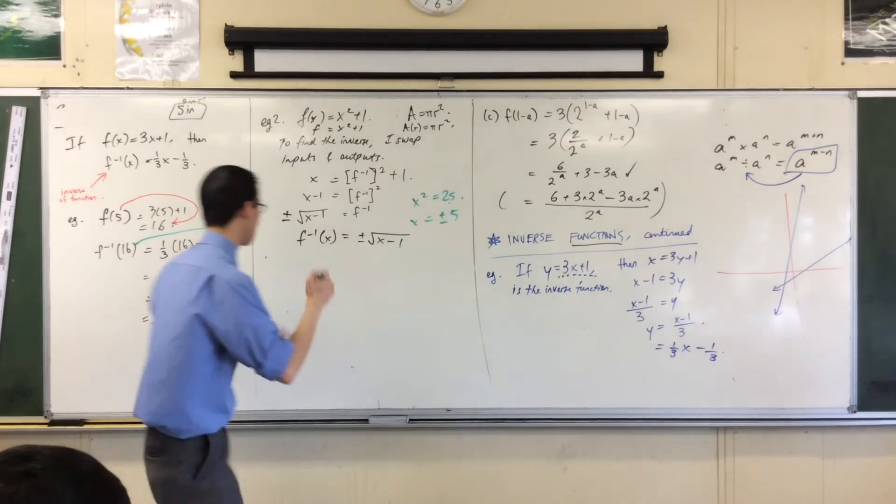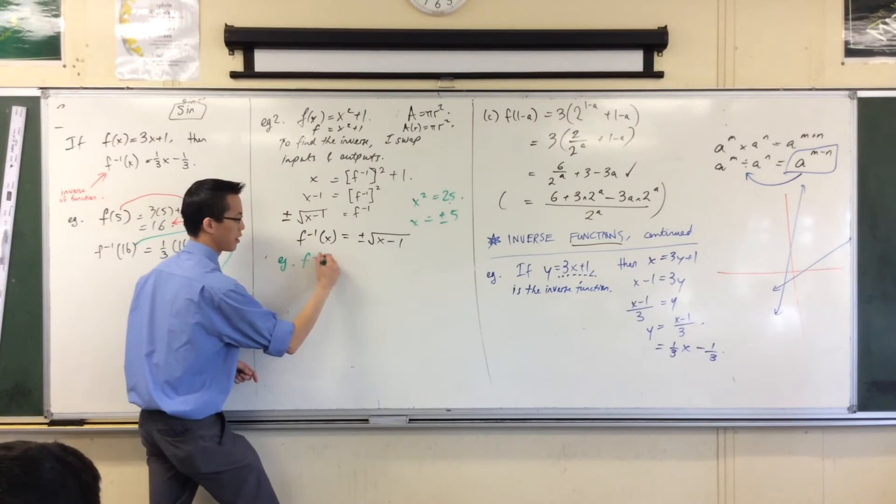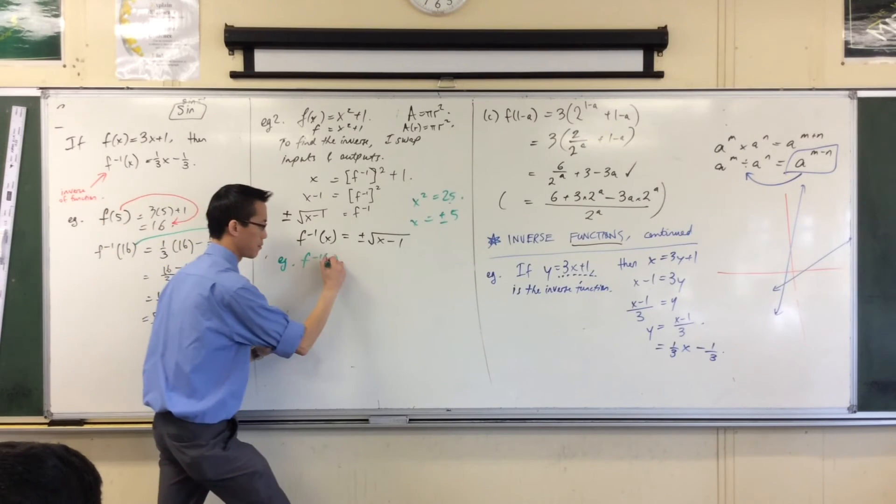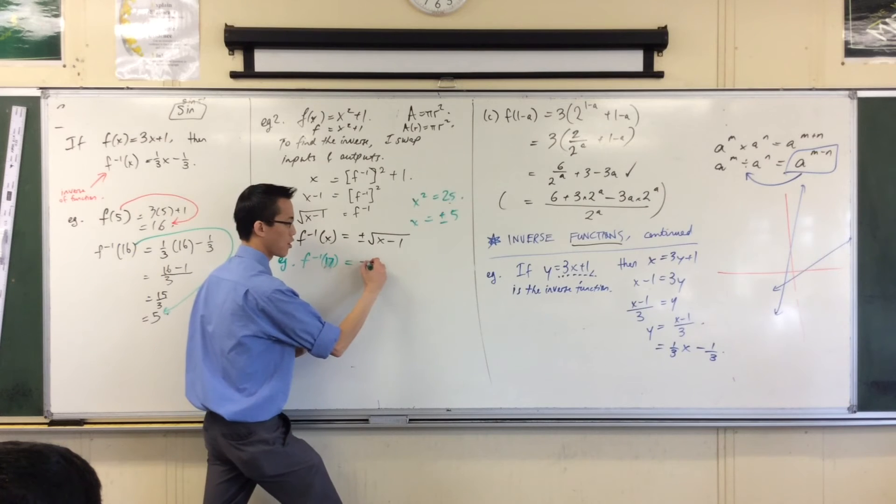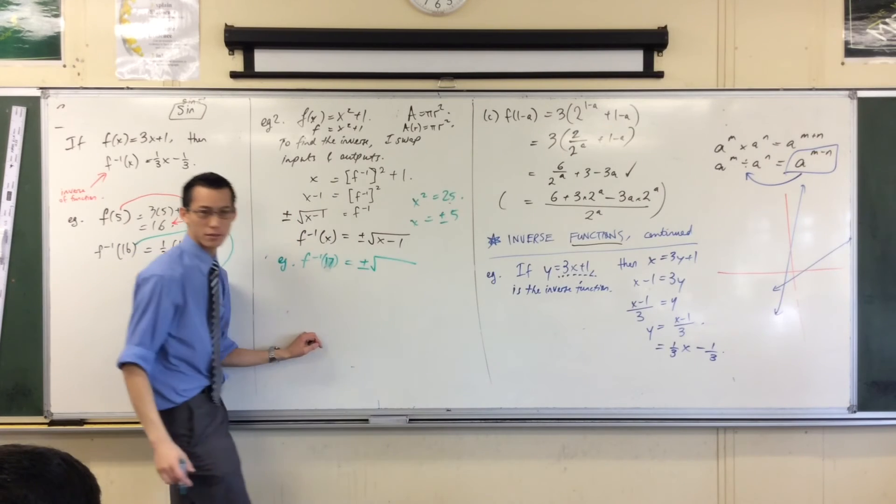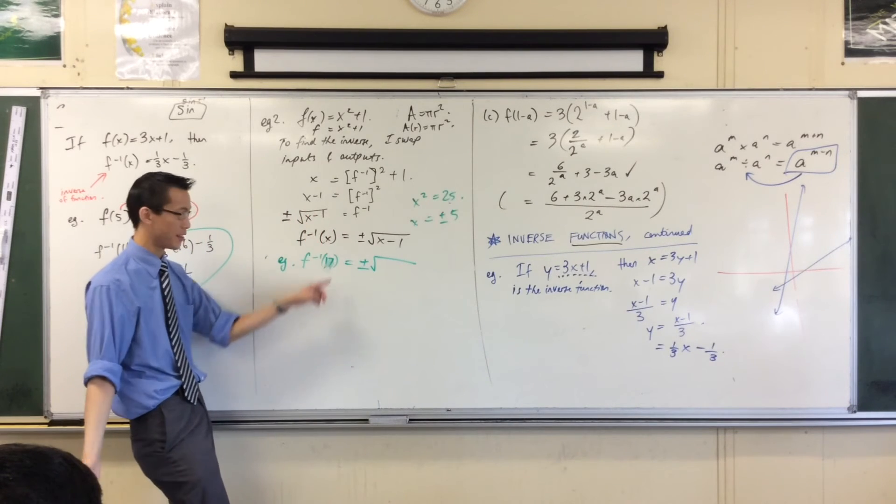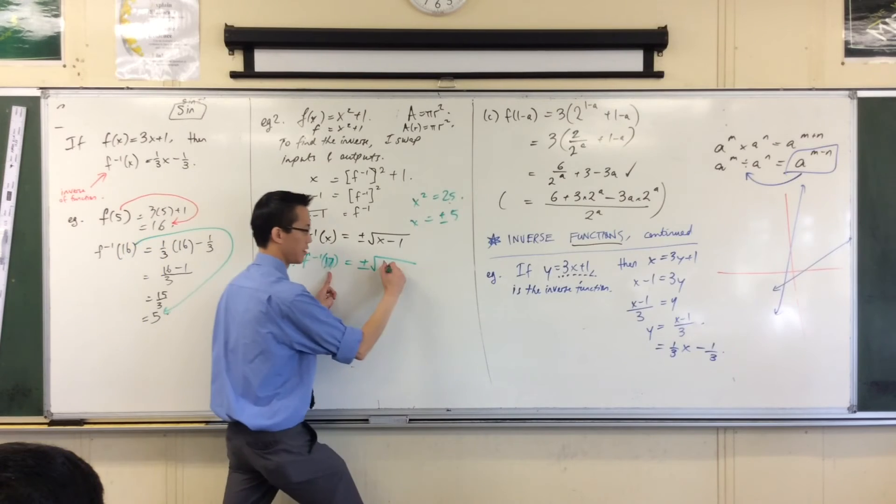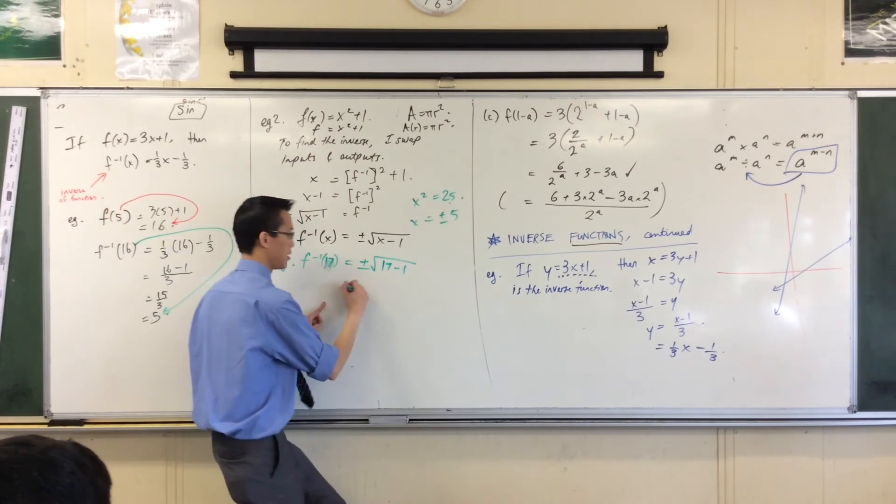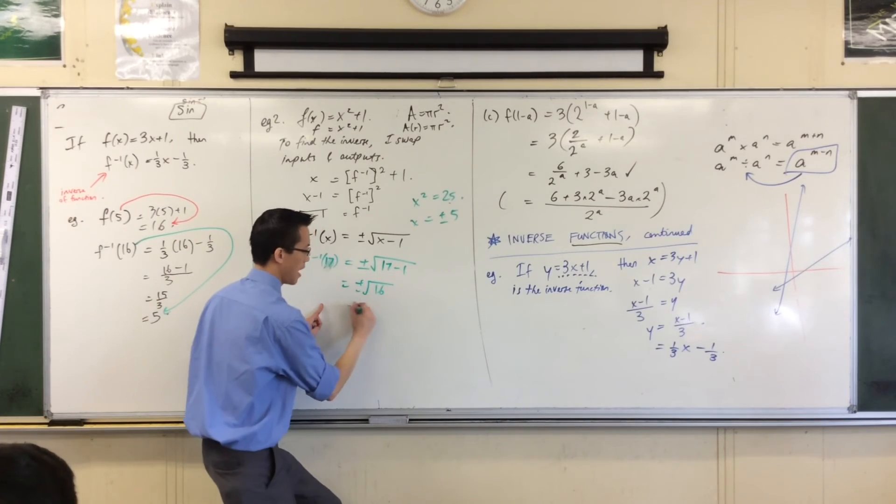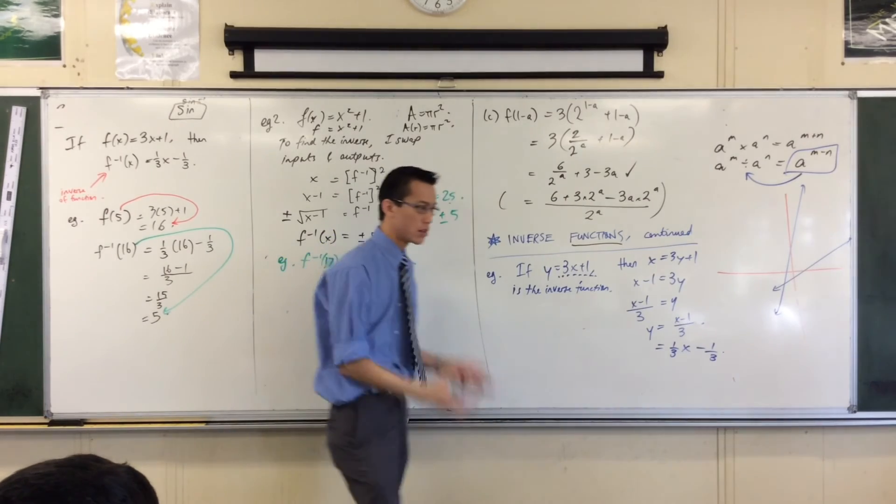I mean just as a quick example. Example: let's put in a number like say, oh I don't know, 17. Okay, when I evaluate this guy I'm going to go ±√, I'm just going to faithfully replace all my x's with 17, okay? 17 - 1, which of course is 16. And so I've got two numbers, two numbers.